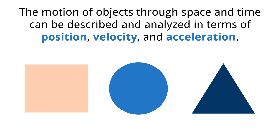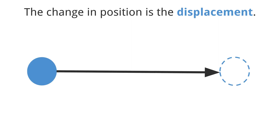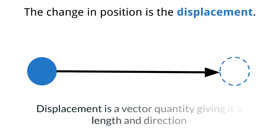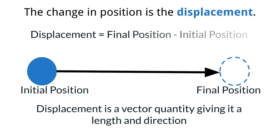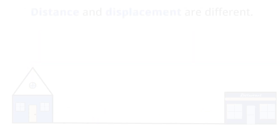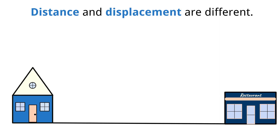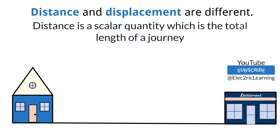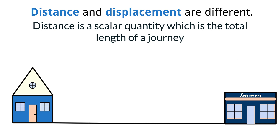Positions, however, change, and how much they change is an important value for physicists to measure and know. We call these measurements displacement and distance. We call a change in position in a straight line displacement. Displacement is a vector quantity that has a numerical value and direction, whose length is measured by finding the change in the position of an object and finding the length between those positions in a straight line. The length is measured in meters. However, there is often confusion about the difference between distance and displacement. Distance is a scalar quantity and measures the total length traveled by an object, whereas displacement is the change in position in a straight line.